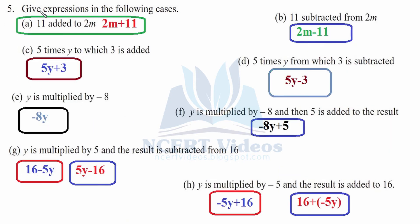Question 5: Give expressions in the following cases. A part: 11 added to 2m. Initially we had 2m, therefore we write 2m first, and then 11 is getting added to it — therefore, we write 2m plus 11. B part: 11 subtracted from 2m. The 'from' part must be written first — therefore, 2m minus 11, because 11 is getting subtracted from 2m.